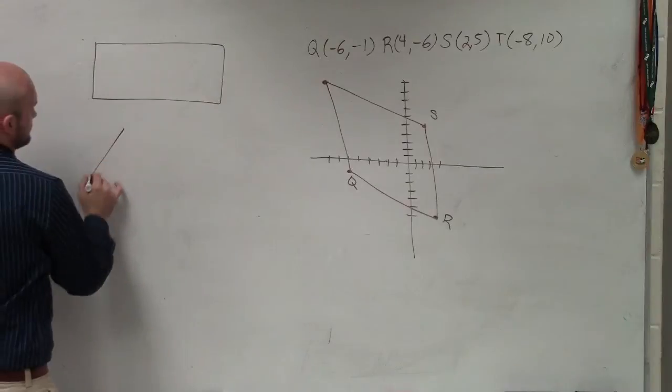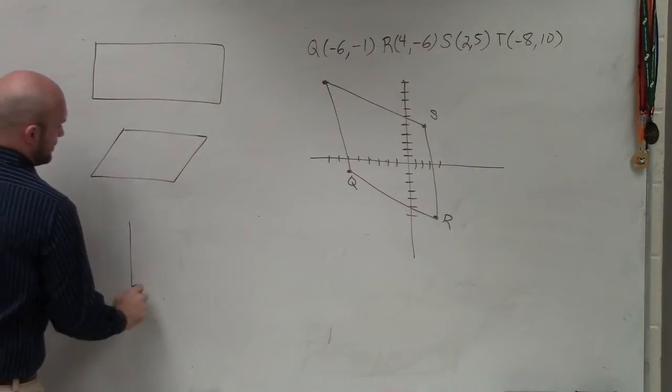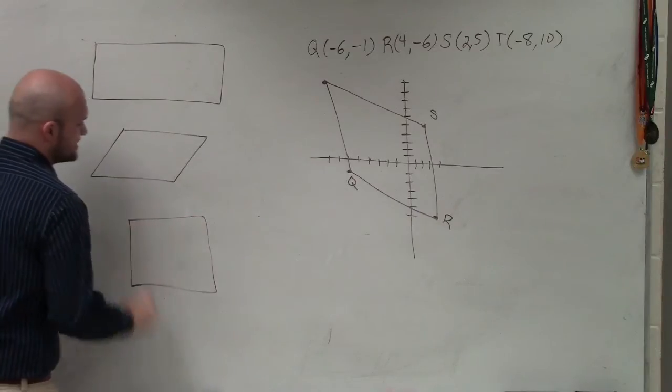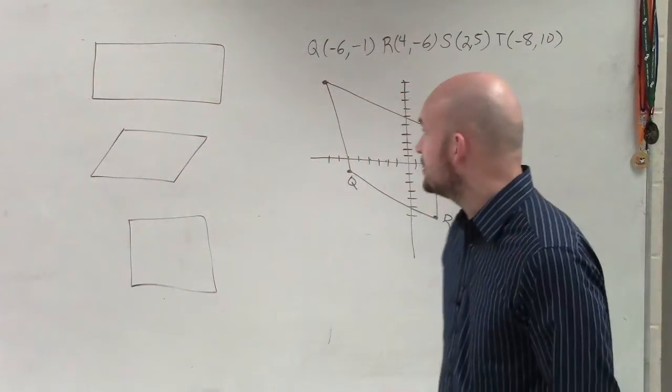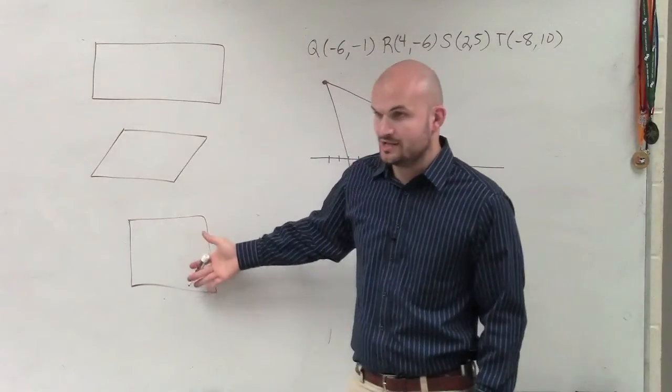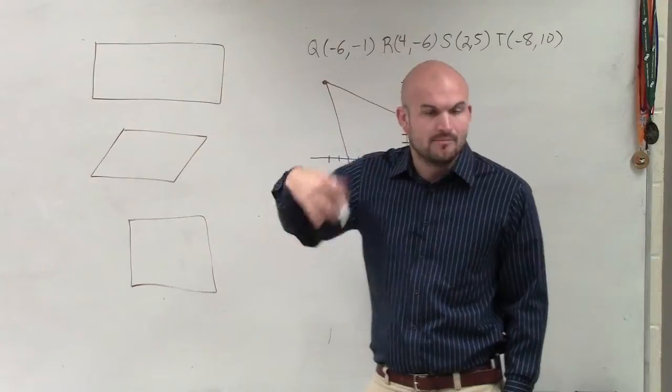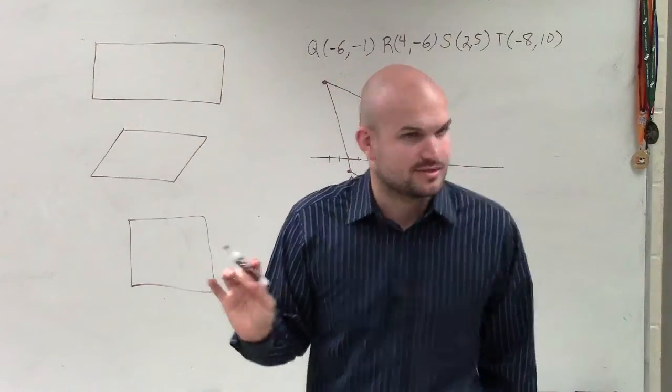Here's a rectangle. Here's an example of a rhombus. And here's an example of a square. So what are the characteristics? Well, obviously, we know that rectangles and squares have 90 degree angles. But what I want to do is I want to look at the diagonals.